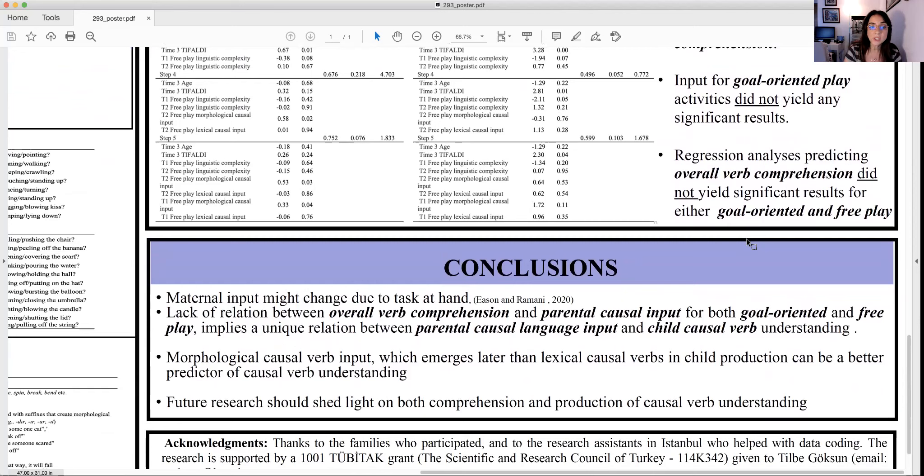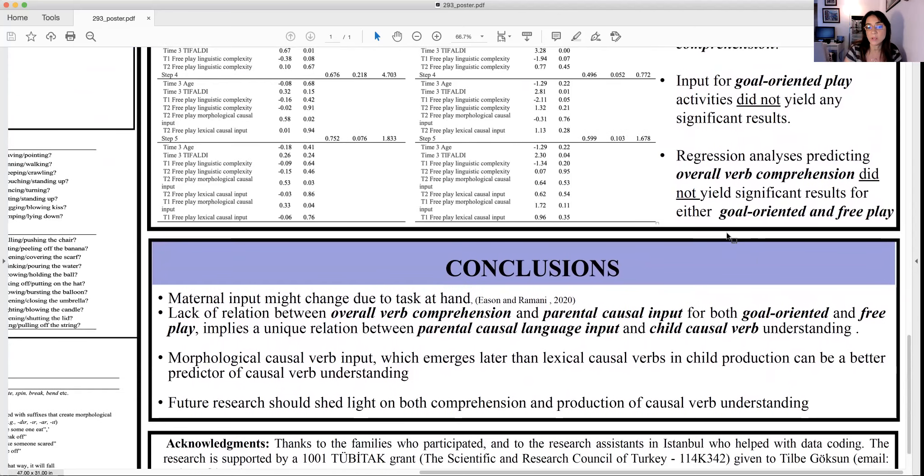What we conclude is maternal input may change due to task at hand, which is the play. Lack of relation between overall verb comprehension and parental causal input for both types of play implies the unique relation between parental causal language input and child causal verb understanding. Morphological verb input which emerges later than lexical causal words in child production can be a better predictor of causal verb understanding, as considered as input.